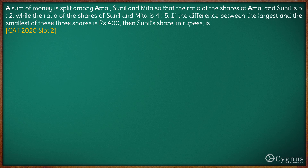A sum of money is split between Amal, Sunil and Meeta so that the ratio of shares of Amal and Sunil is 3:2, where A is the amount with Amal and S is the amount with Sunil. The ratio of shares between Sunil and Meeta is 4:5. If the difference between the largest and the smallest of these shares is 400, then Sunil's share is how much?